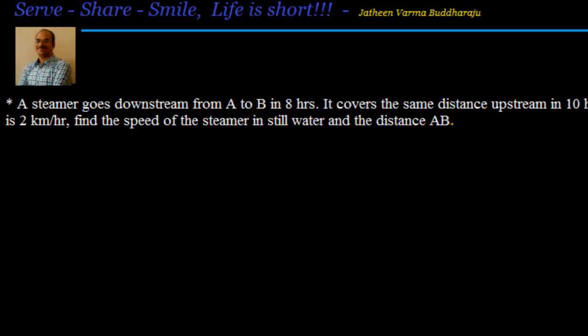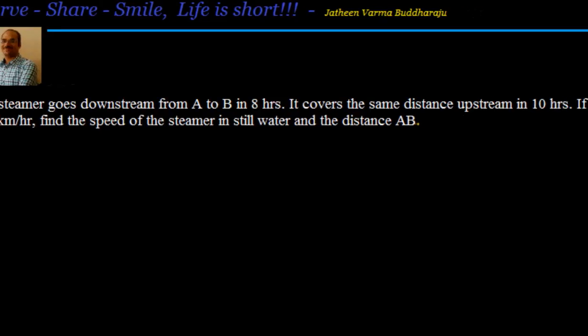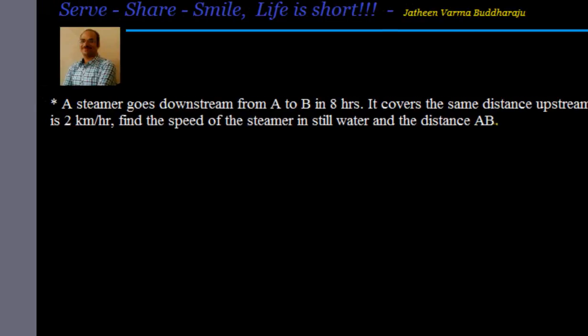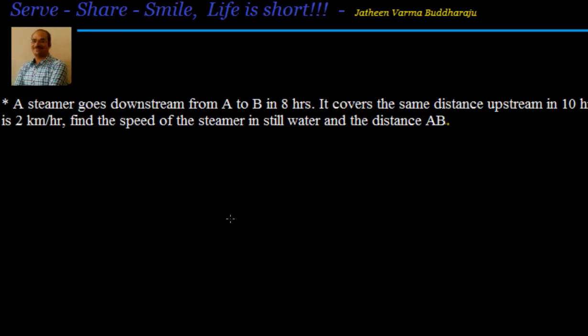Welcome back. In this session we'll look into a simple example related to linear equations in one variable — a steamer or boat problem, which is very familiar and found in many competitive exams and eighth grade exams. Let's understand this problem: a steamer goes downstream from A to B in eight hours. It covers the same distance upstream in ten hours. If the speed of the stream is two kilometers per hour, find the speed of the steamer in still water and the distance AB.